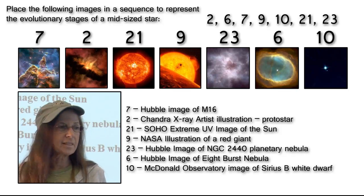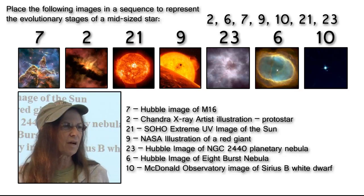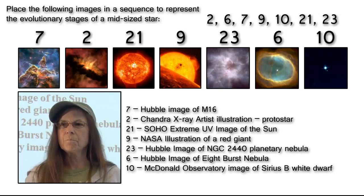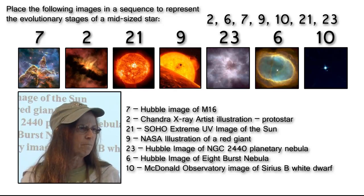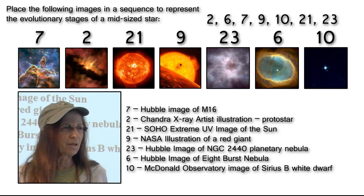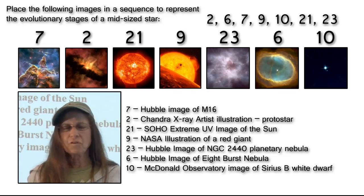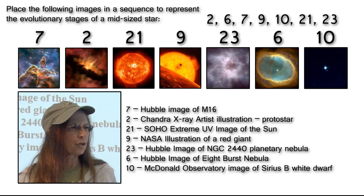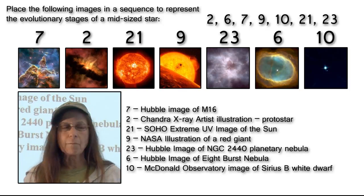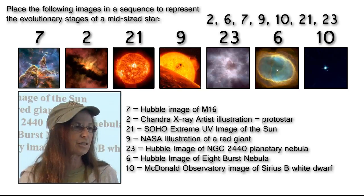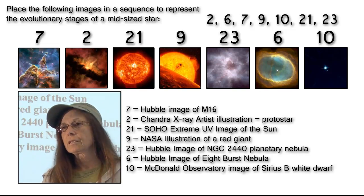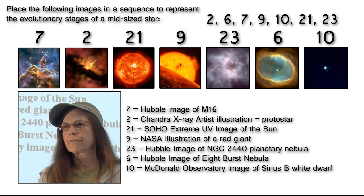Then 21 is an image of the Sun. It is a SOHO image, so it's an extreme ultraviolet image of the Sun, but from the SOHO mission. Number 9 is a NASA illustration of a red giant, because our Sun is going to go through the red giant stage, and then it is going to collapse into a white dwarf in a planetary nebula. The only difference between 23 and 6 is that the material in 6 has spread further away from the white dwarf in the center, so 23 is a younger planetary nebula than number 6. Both of those are Hubble images. Number 6 is the Eight Burst nebula, which is one of my favorite planetary nebulas of all time. Number 10 is a McDonald Observatory optical image of a white dwarf.